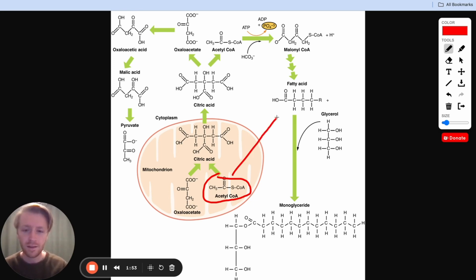Our goal here is to convert it into a fatty acid. We want to take these acetyl-CoA building blocks, make them into a fatty acid. First though, in order to get it out of the mitochondria and into the cytoplasm, we need to convert it into citric acid or citrate.